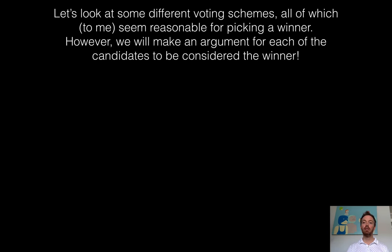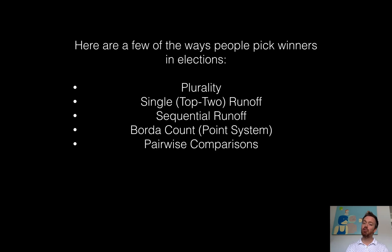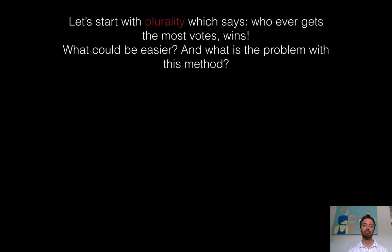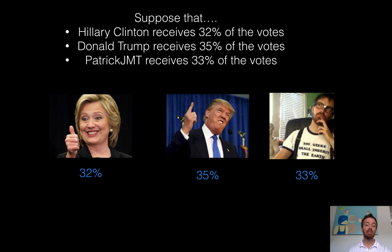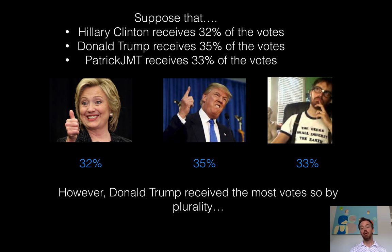We'll look at a few different voting systems: plurality, runoff, sequential runoff (for more candidates), a point system, and pairwise comparison. Let's start with plurality because it's the easiest. Plurality simply says whoever has the most votes — not necessarily the majority, since majority implies over 50% — that person is the winner. In this case, Donald got 35%, which is the plurality, so he would be declared the winner.